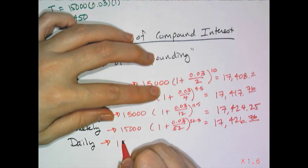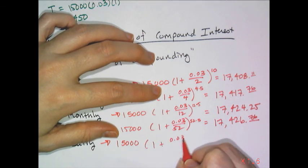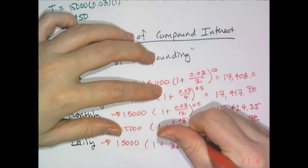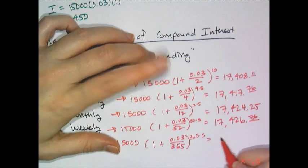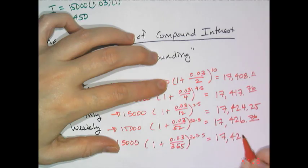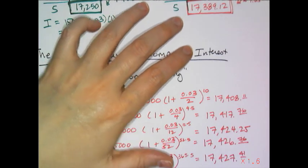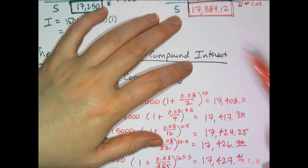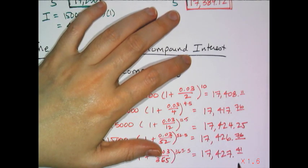Daily compounding — how credit cards calculate interest — is 1 plus 0.03 divided by 365, raised to the 365 times 5 power. You might want it to be a huge difference, but it's not — that's the evil genius. It's just a little bit higher: $17,427.41. So by adding one word to a contract, a lender squeezes a bit more money — going from $17,389.12 to $17,427.41.